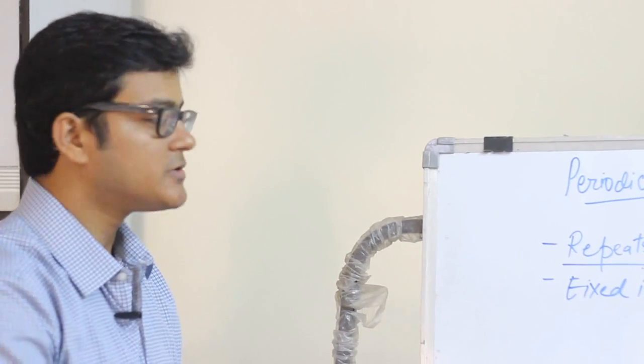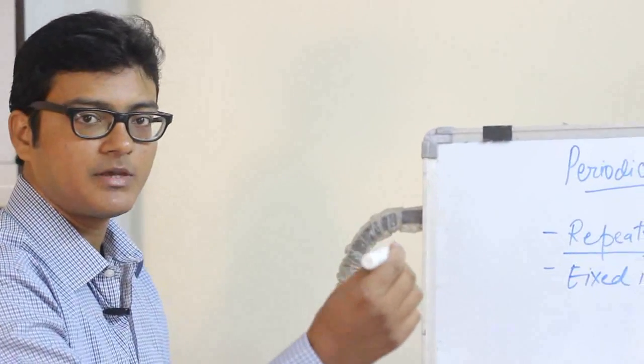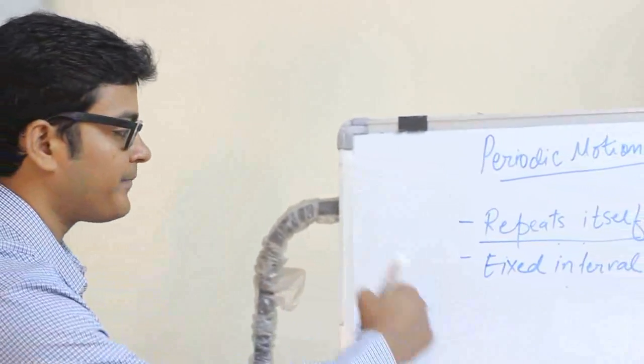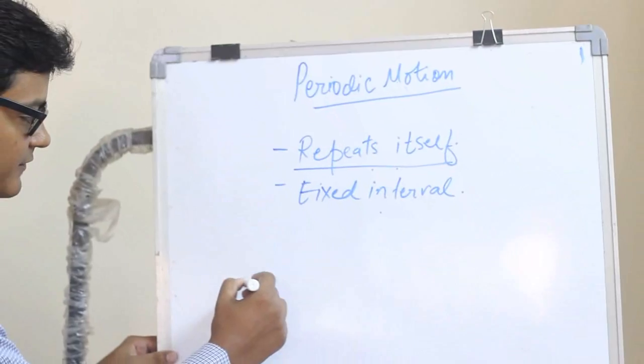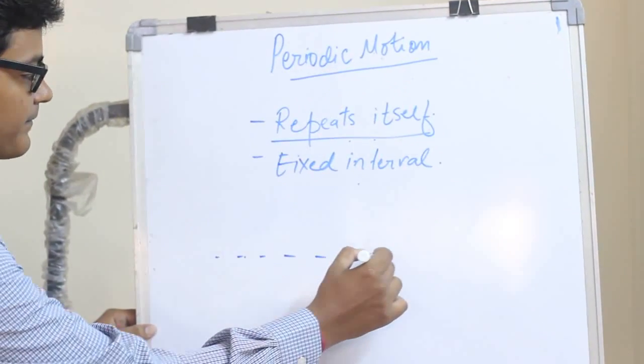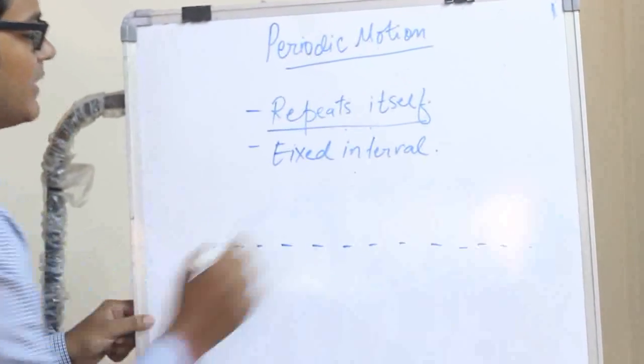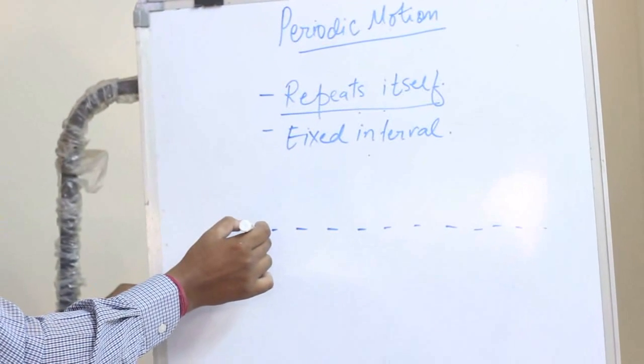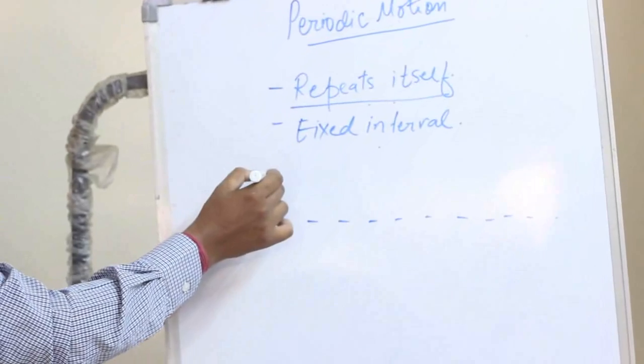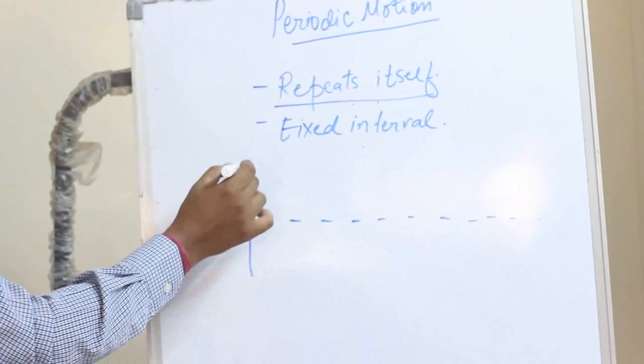Periodic motion is something which repeats itself. Let's say that my pen is the body which is repeating itself. I keep the pen here, let's draw a reference line first. This is the reference line, and my pen, which is the object, is moving up and down the same distance.